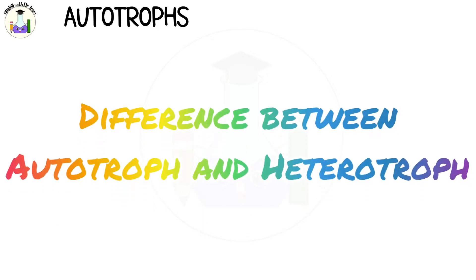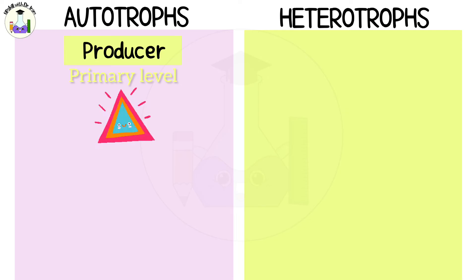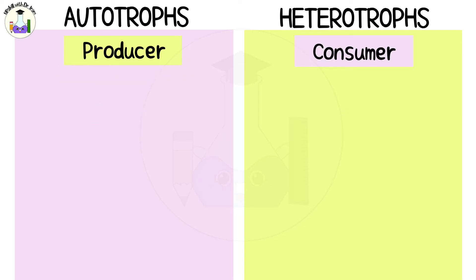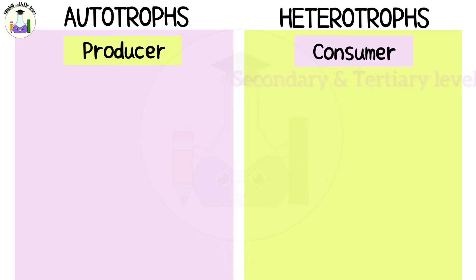Hi everyone, today we are going to quickly look at the difference between autotrophs and heterotrophs. Autotrophs are also known as producers and they form the primary level of the food pyramid. Heterotrophs are also known as consumers and they form the secondary and tertiary level of the food pyramid.